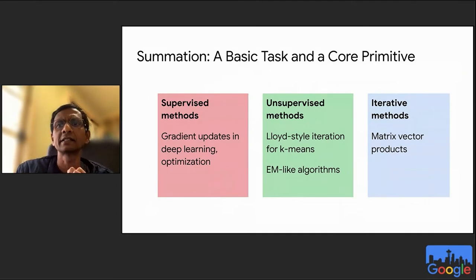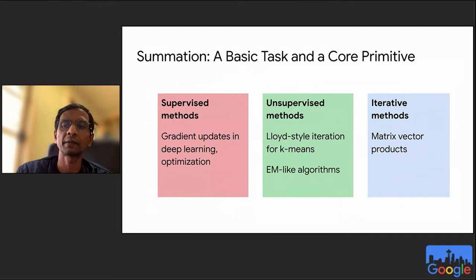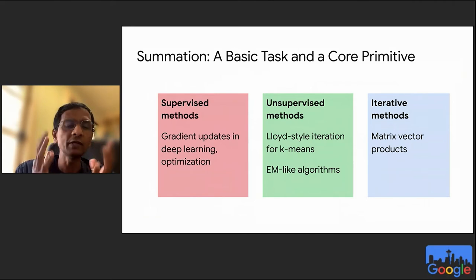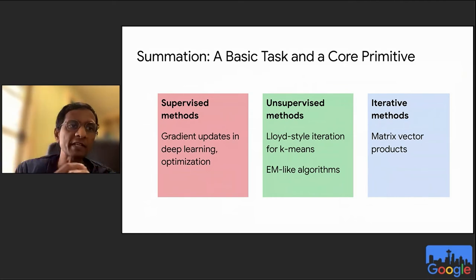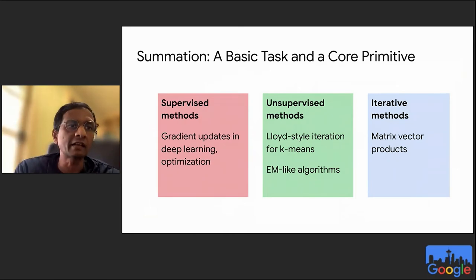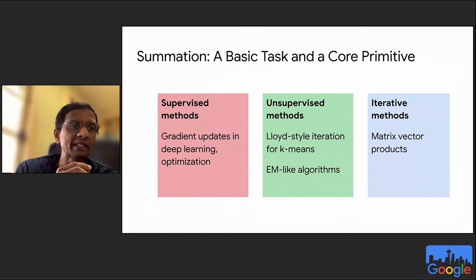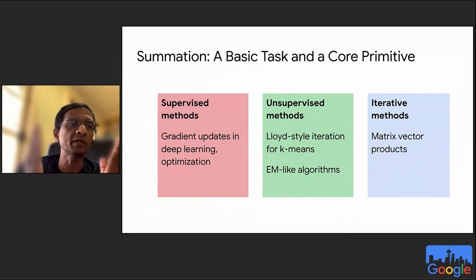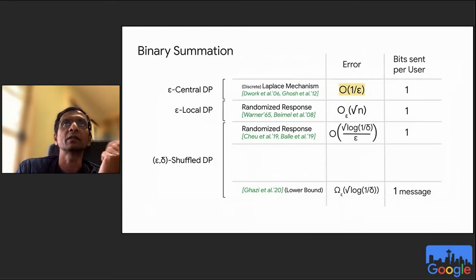Summation is not only a basic federated aggregation task — it's a core ML primitive. Gradient descent requires distributed vector summation or averaging. Lloyd's iteration for k-means recomputes cluster centers via summation. Most EM-like algorithms and iterative methods like PageRank or matrix-vector computations involve weighted summation. So efficient, private, distributed summation of real vectors is fundamental.